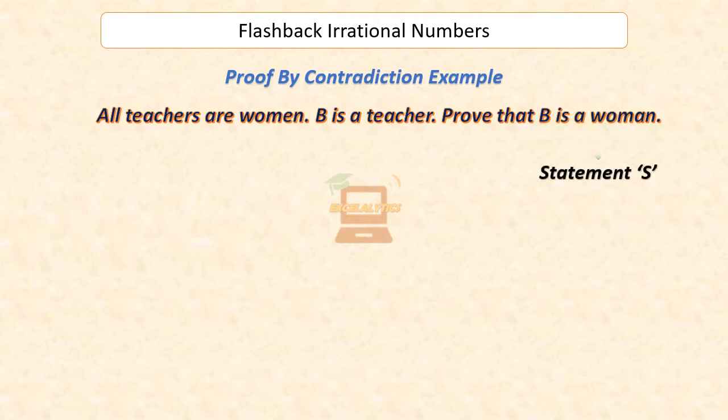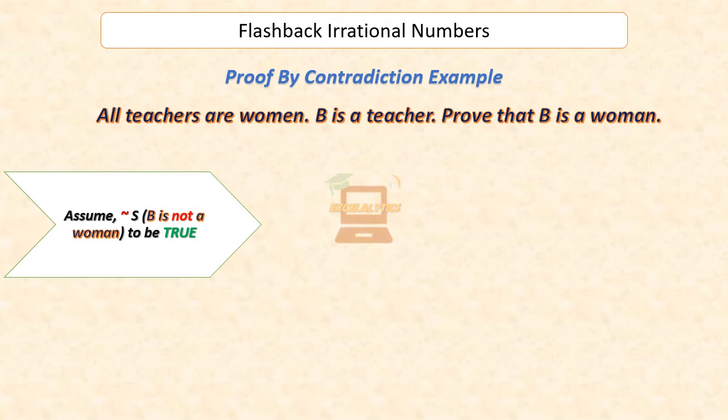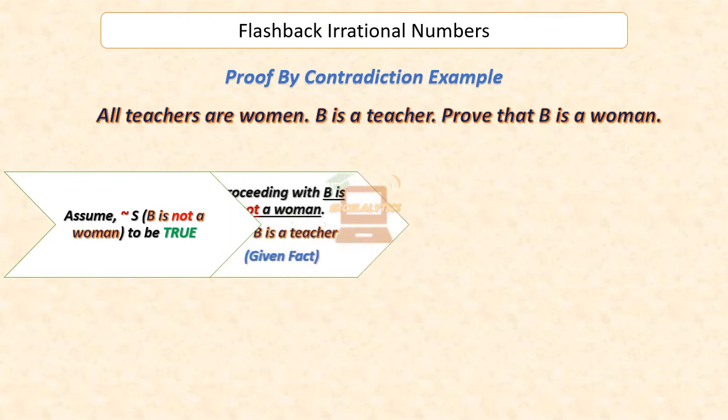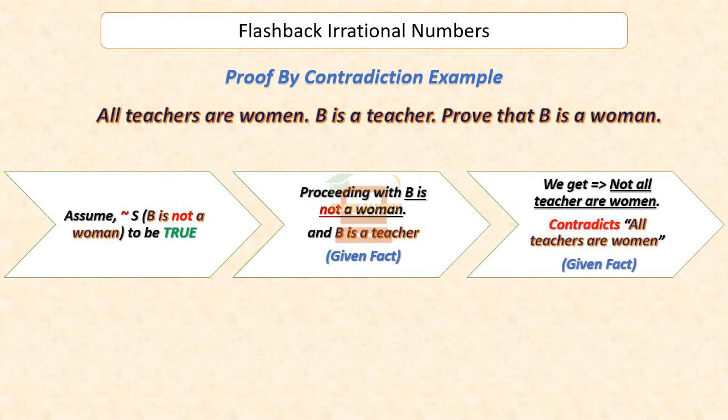So then assume that B is not a woman — that is, the negation of statement s — to be true. Since B is not a woman, but B is a teacher, which is true information that we can't deny, we have a counter-example to the statement 'all teachers are women.'